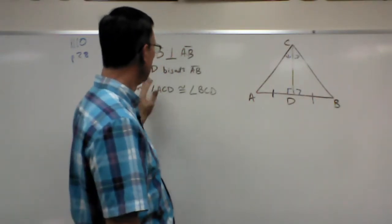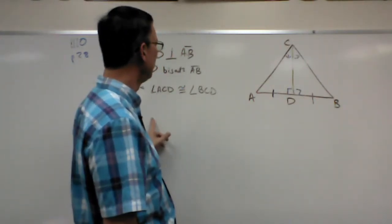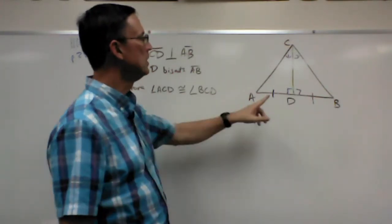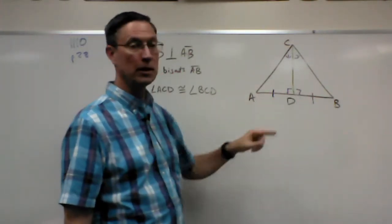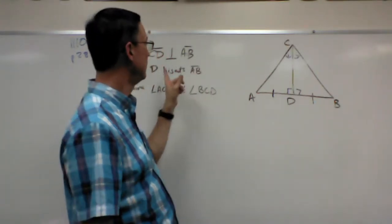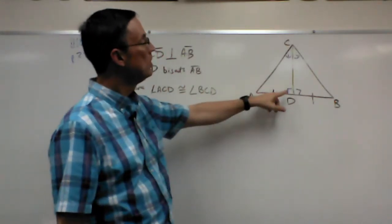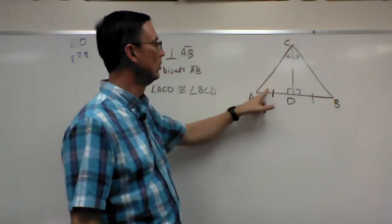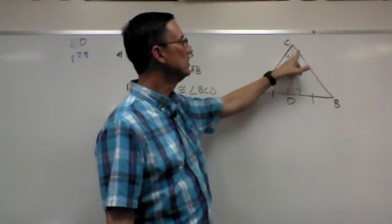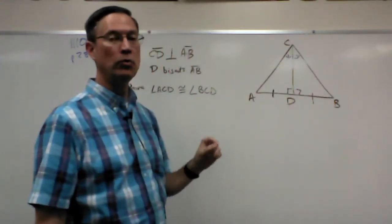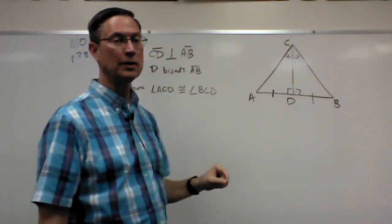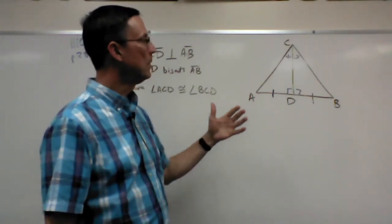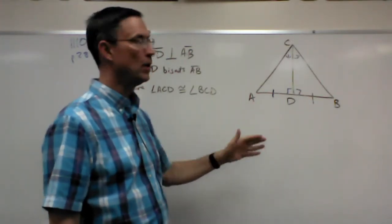So as I start going through here, one of my first, well, the first statement will be what's given. But probably the next one is to state that these are right angles, by definition of bisecting. And then I have to insert that statement that actually says this triangle and this triangle are right triangles. Seems obvious, but we have to state that. And again, just definition of right triangles.